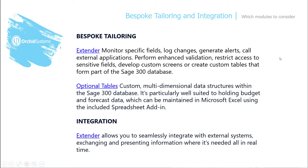Secondly, Optional Tables allows for custom multi-dimensional data structures within your Sage 300 database. It's very well suited to holding budget and forecast data, which can be maintained in Microsoft Excel using the included spreadsheet add-in. And lastly, in terms of integration, Extender allows you to seamlessly integrate with external systems, exchanging and presenting information where it's needed — most importantly, in real time.